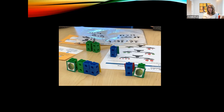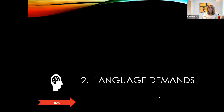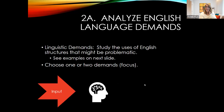So when we look at the context — that's the first part of input — now we're going to look at language demands, which is the second part of input. We're going to analyze the English language demands, looking at the linguistic demands of a task. We want to study the use of English structures that might be problematic, and we'll see some examples on the next couple of slides.